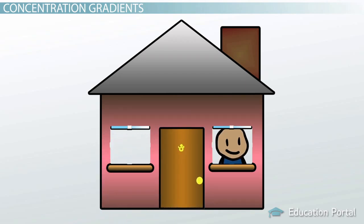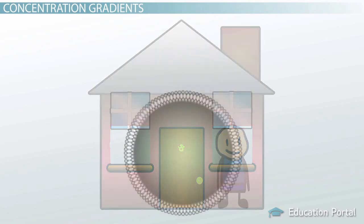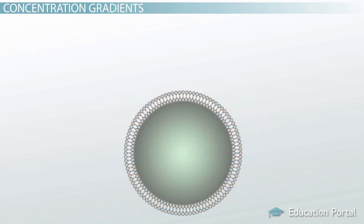So what crosses a cell membrane and why? Well, there are several types of ways to transport things across a cell membrane. When and how things travel depends largely on the concentration of solutes in your cells, or the dissolved molecules.